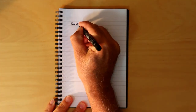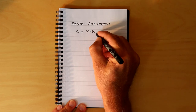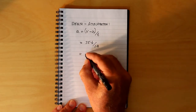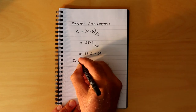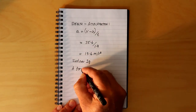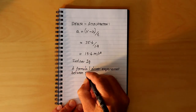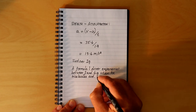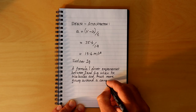Now let's check the claims for Stealth's acceleration. We know the formula: a = (v − u) ÷ t. The final speed is 35.4 metres per second, so 35.4 ÷ 1.9 = 13.4 metres per second squared, just over 2g. A Formula 1 driver experiences between 2 and 4g when he accelerates, and much more going round a corner. The claims are close, though you could argue that energy is lost in the system, so the claims are a little generous. That's it for now — thank you for watching.